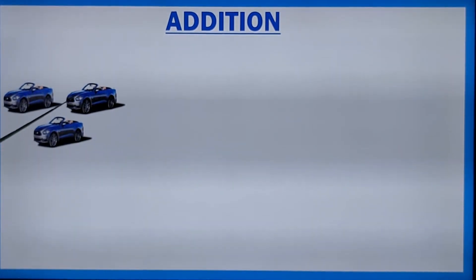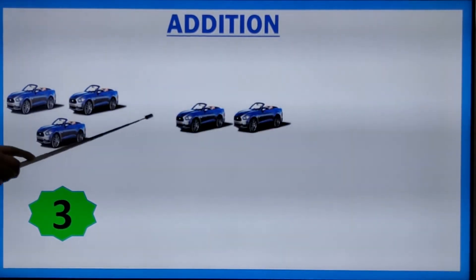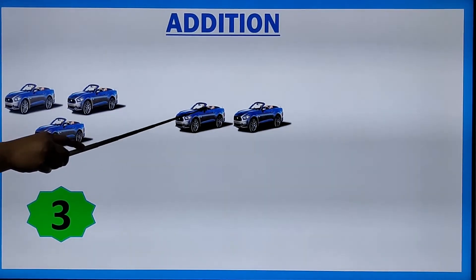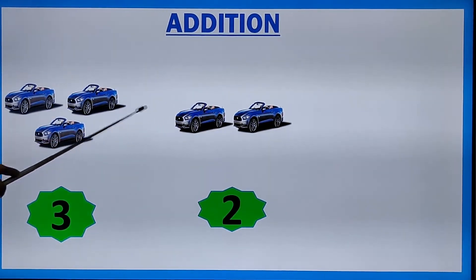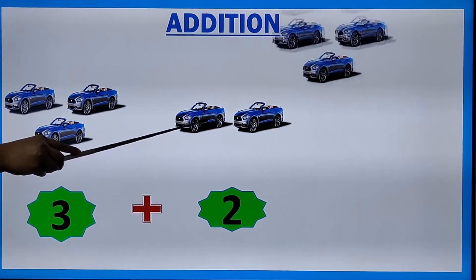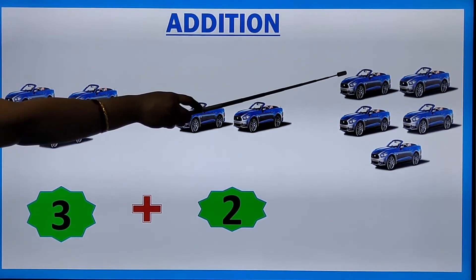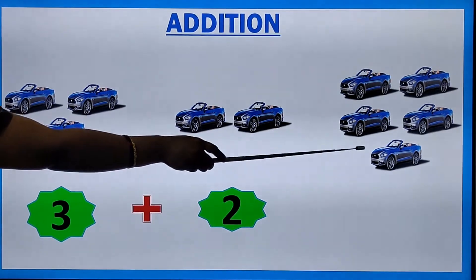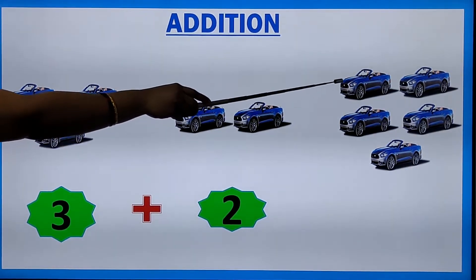How many cars are there here? Let's count — one, two, three. Now I am adding two more cars with that — one, two. Three cars plus two cars makes how many cars? Together, one, two, three, four, five.